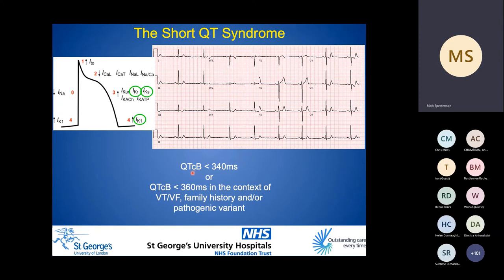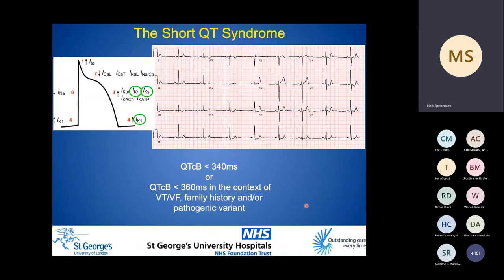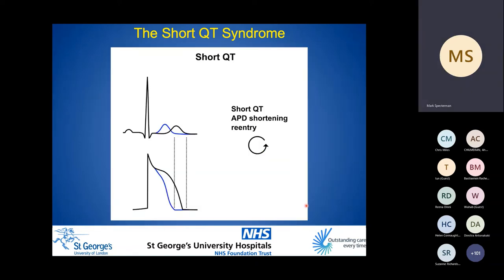Gain-of-function variants in potassium channel genes encoding IKr, IKs, and IK1 currents lead to an imbalance of outward repolarizing current and shortened action potential duration, associated with the short QT phenotype. A consistent finding of a Bazett's corrected QT interval of less than 340 milliseconds is diagnostic, or less than 360 milliseconds with other supporting factors, contingent on no other confounding reversible cause such as electrolyte disturbance like hypercalcemia. Shortened action potential duration promotes re-entry, but again it is the accentuated dispersion of repolarization that promotes arrhythmia; both atrial and ventricular arrhythmias are encountered in short QT syndrome.